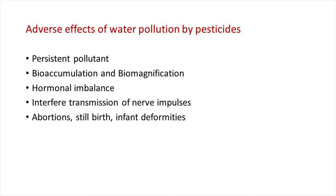These pesticides enter water bodies by a number of ways such as agricultural runoff, deposition from air, and direct sprays on water surface to kill mosquitoes and other pests. Once they enter the aquatic ecosystem, they concentrate in all components of the system. They remain in water persistently in soluble or suspended form or get absorbed on the surface of silt and organic particles. From sediment, they enter the food chain through bacteria, phytoplankton, and other aquatic organisms. By the process of biomagnification, the concentration of pesticide residues increases on moving up in the food chain.